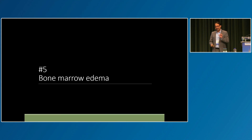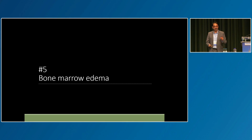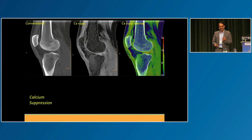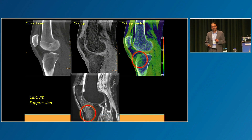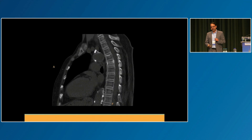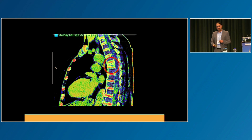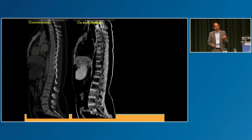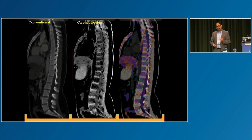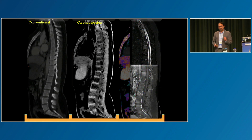You can use calcium suppression images to look for marrow abnormalities in trauma and malignancy. Here's a tibial microfracture, nicely corresponding to the MRI. Here's a patient with trauma — there's a compression fracture in the thoracic spine based on marrow edema, and you can tell that this is acute. This is a patient with lung cancer — bone windows look normal, but on calcium suppression there are multiple vertebral lesions corresponding perfectly to the MRI.